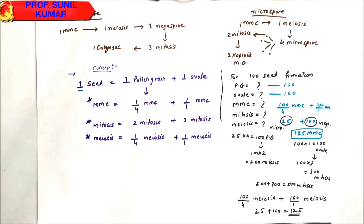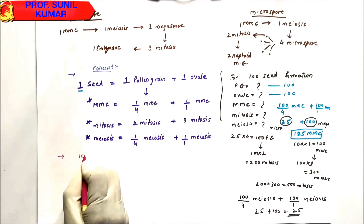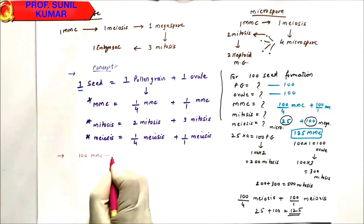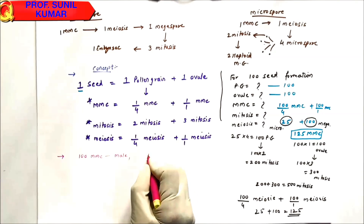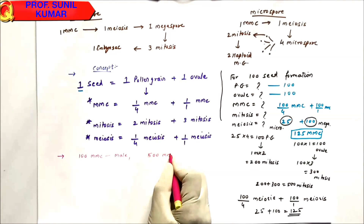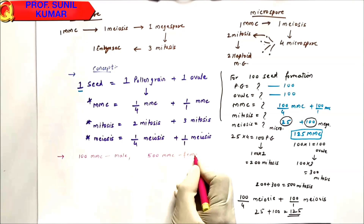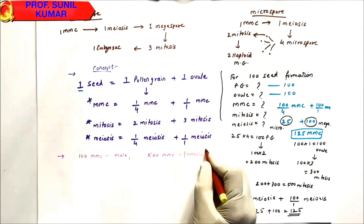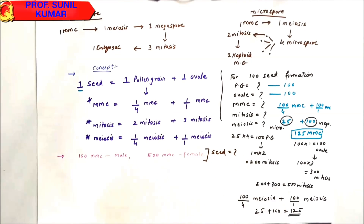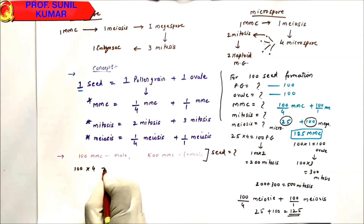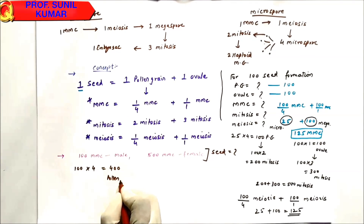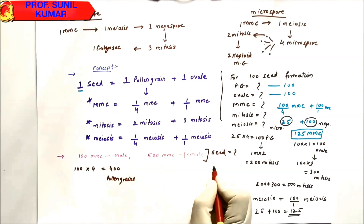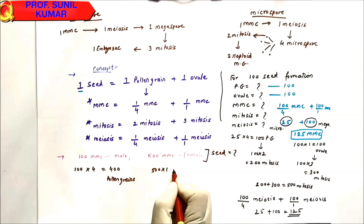Questions can be based on MMC, mitosis, or meiosis. The question can also be reversed — for example: there are 100 MMCs of male and 500 MMCs of female; how many seeds are formed? For 100 male MMCs: 100 × 4 = 400 pollen grains. For 500 female MMCs (unisporic): 500 × 1 = 500 ovules.